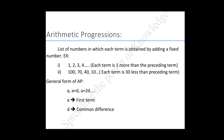The general form of an arithmetic progression is: a, a plus d, a plus 2d, a plus 3d, and so on — where a is the first term and d is the common difference.